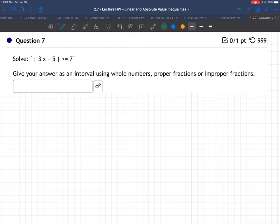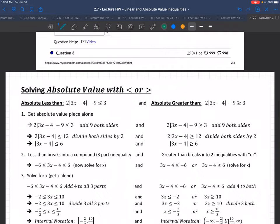Welcome to an example in which we're solving absolute value greater than. Let me write it down here for us: 3x plus 5 absolute value greater than or equal to 7. So how do we do it?